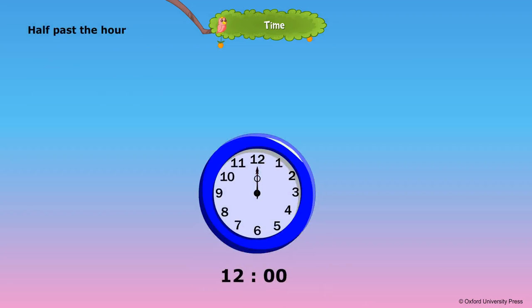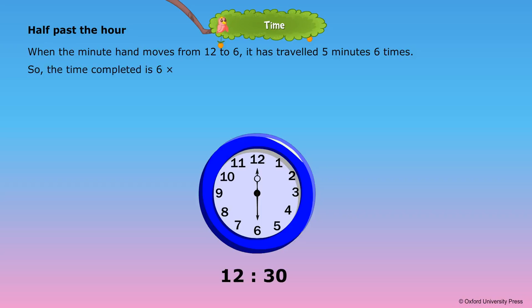Half past the hour. When the minute hand moves from 12 to 6, or half face of the clock, it has travelled 5 minutes 6 times. So the time completed is 6 times 5 equals 30 minutes. This is called half past, 12:30 or half past 12.